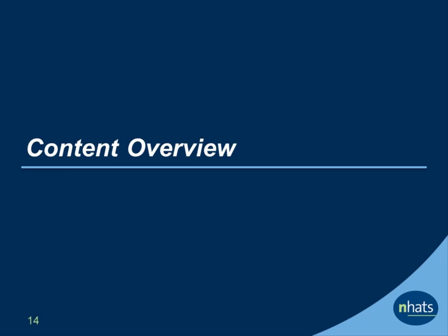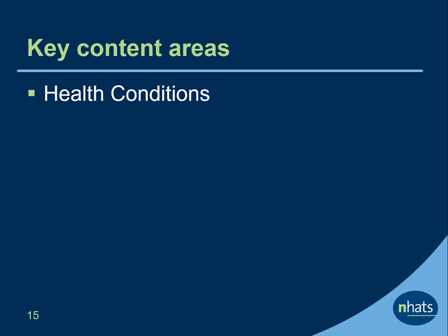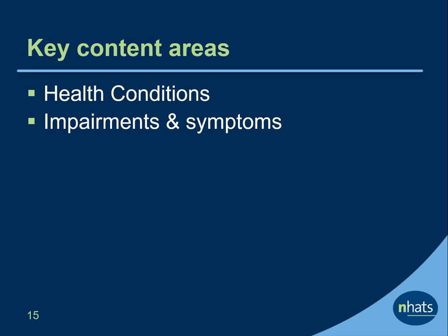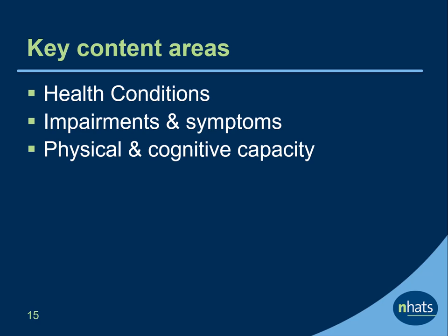Next, let's take a closer look at the content in the NHATS interviews. The content areas in NHATS flow directly from its conceptual framework and include a section on health conditions which asks about common diagnoses, hospital stays, and surgeries, and common clinical concerns. The impairments and symptoms section asks about impairments in several body systems, pain and fatigue, and sensory impairments. Physical capacity is measured with both performance-based and self-reported items. Cognitive capacity is measured with a series of activities related to memory, orientation, and executive function. Proxy respondents complete an informant screener for dementia.